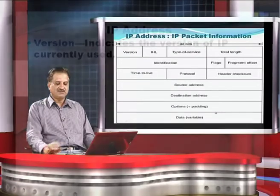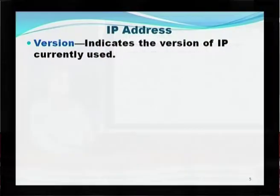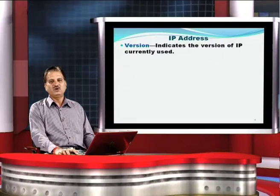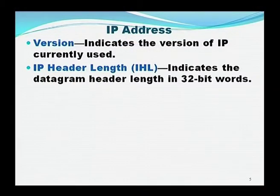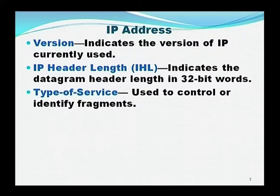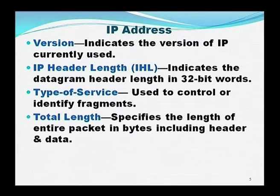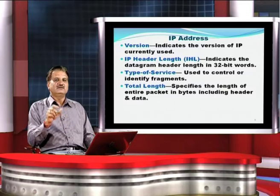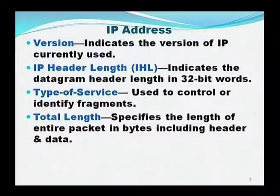Description of these different segments: Version indicates the version of IP address currently being used — whether we are using IPv4 or IPv6. IP header length indicates the datagram header length in 32-bit words. Type of service is used to control identification of various fragments. Total length specifies the length of the entire packet in bytes, including header and data — so this IP address consists of these 32 bits with one data segment padded.